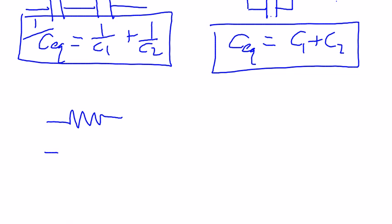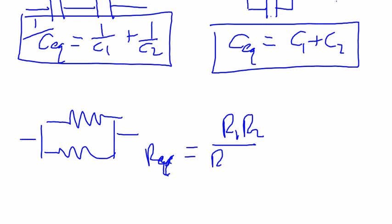if there were just two of them, a shortcut is, well, R equivalent is equal to R1 R2 over R1 plus R2. This is only true if there's two resistors. This is a simplified version of doing the 1 over R equivalent method.